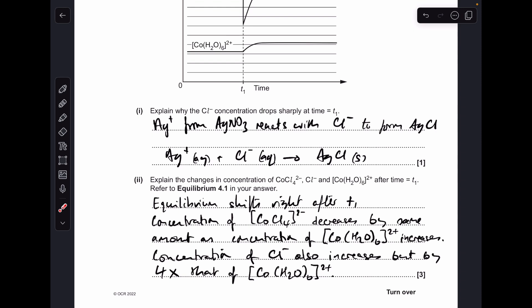So here's how I've written it up. I'm saying equilibrium shifts to the right after T1. Concentration of the cobalt tetrachloride decreases by the same amount as the concentration of cobalt hexa aqua 2+ increases. And then the final thing, the concentration of the chloride ions also increases but by four times that of the hexa aqua.